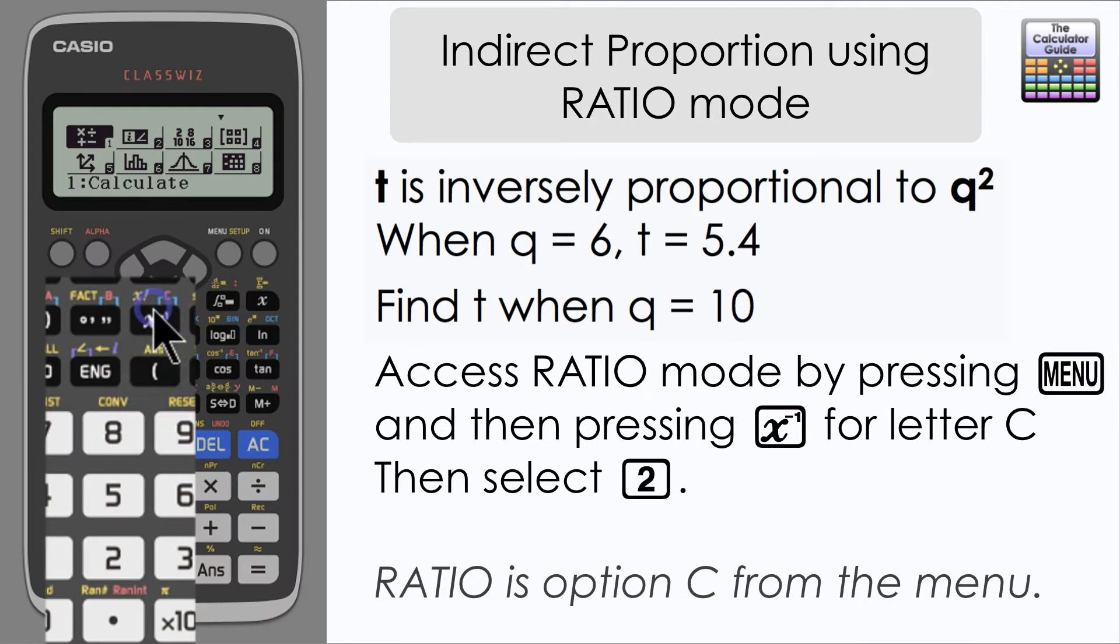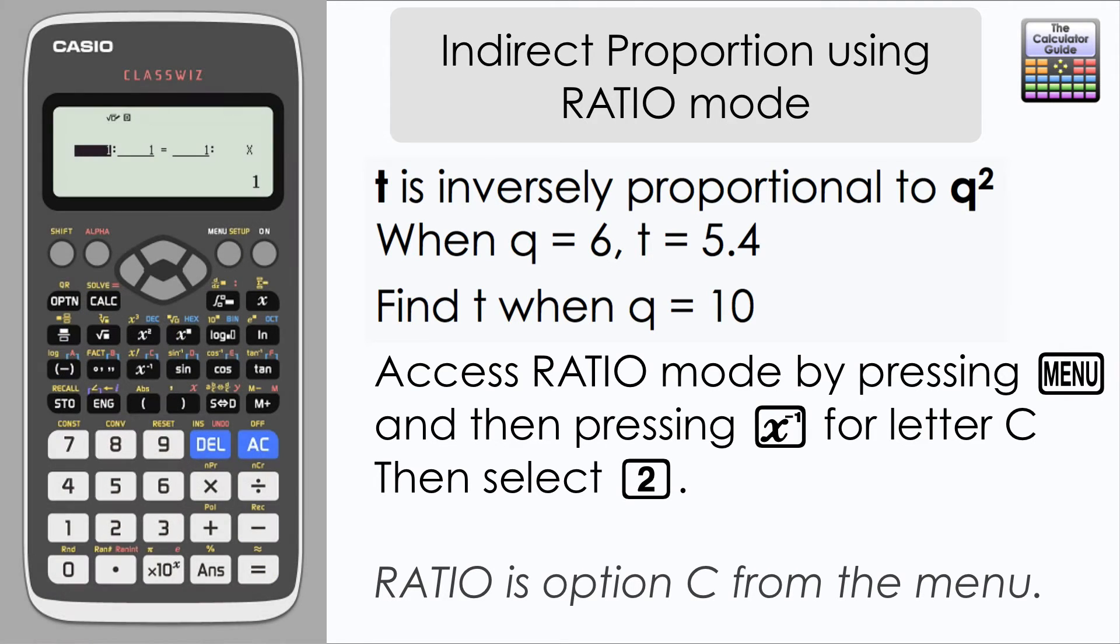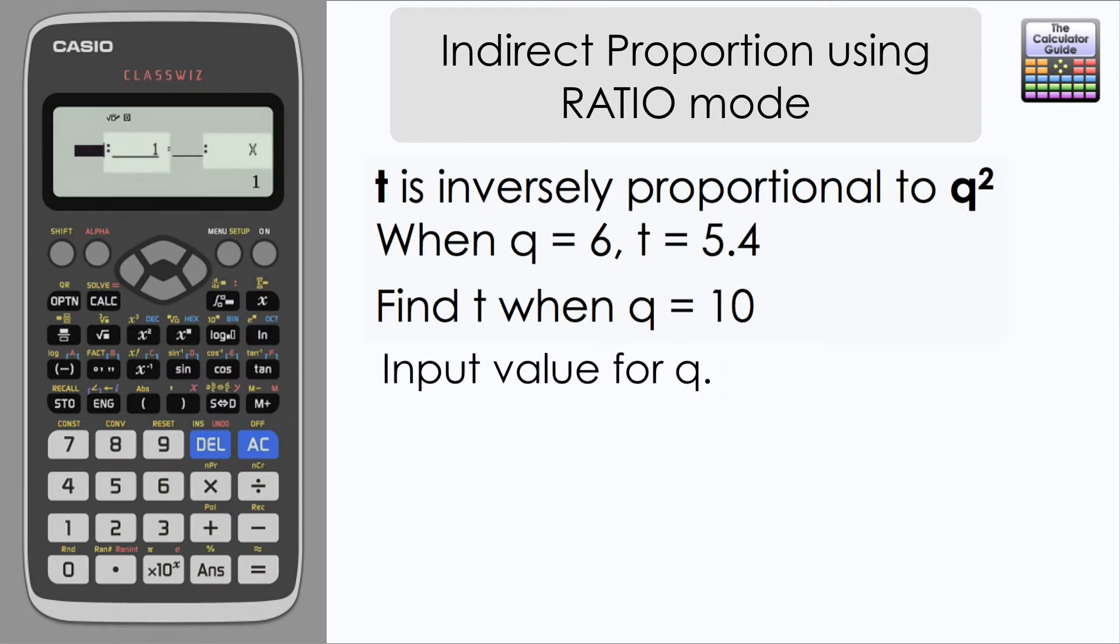We're going to select C from the menu for ratio mode and I'm going to select 2. Notice how we're looking for the missing right hand side of the ratio in this instance. I'm going to place my values for Q on the left hand side of the ratio as I'm looking for a value of T and that will be on the right hand side of both ratios here.